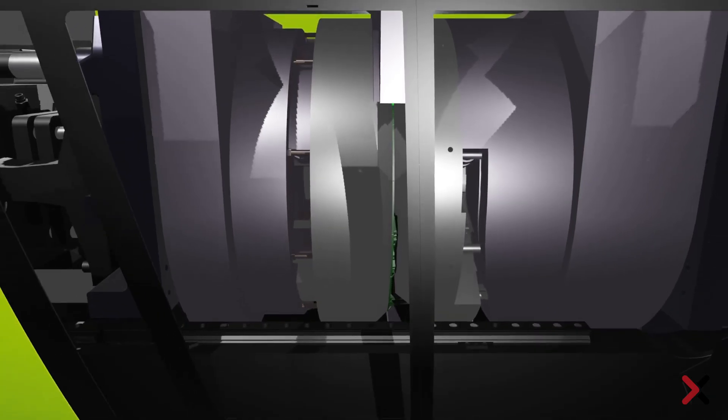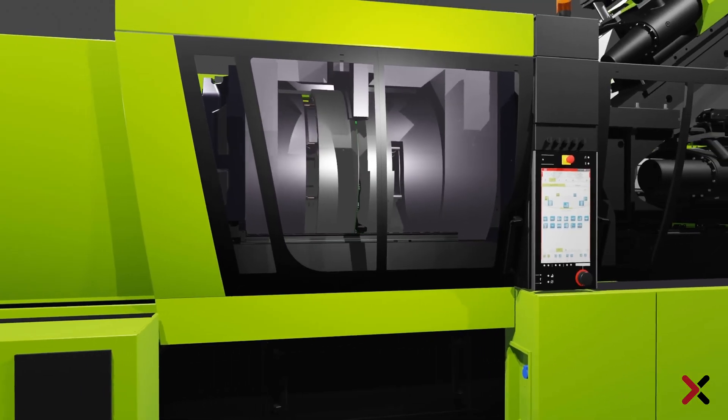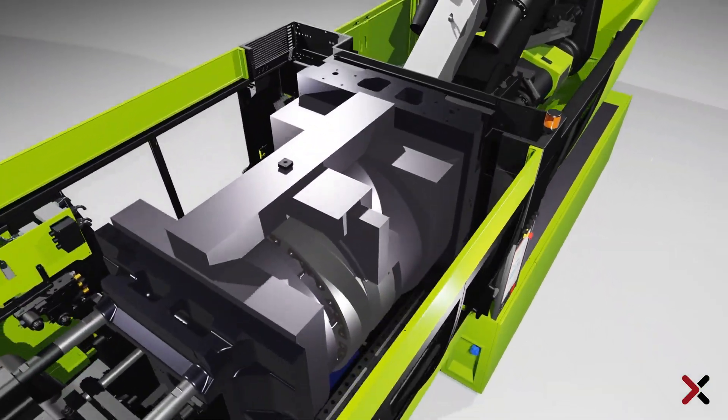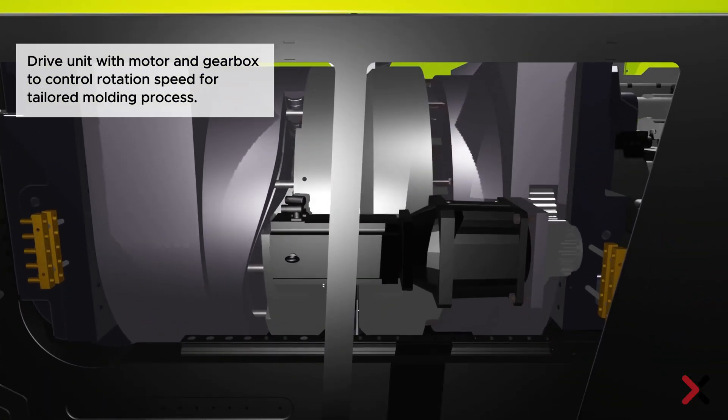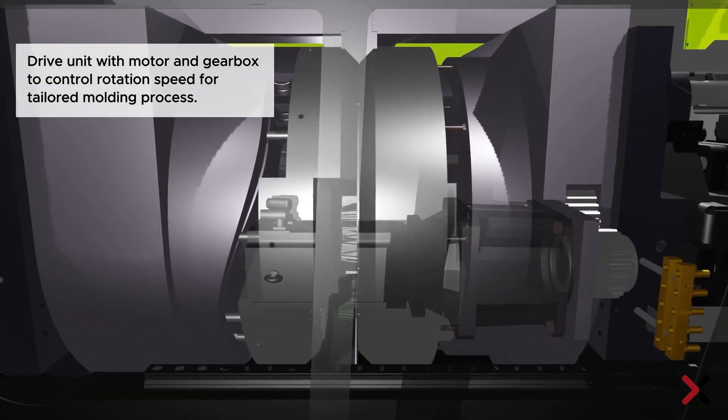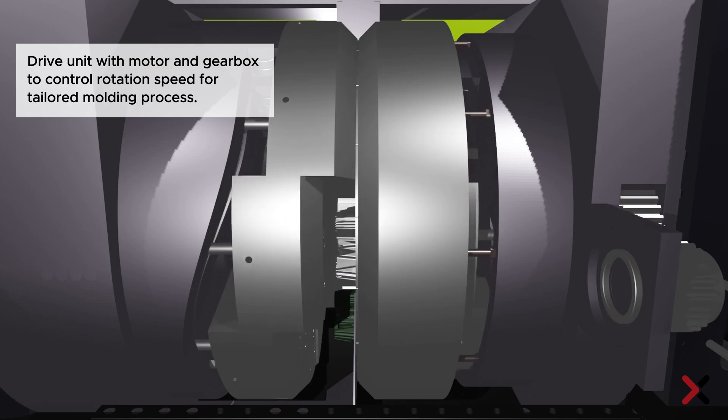The required drive unit of the rotary mold is situated at the rear, where a motor propels the rotating unit through a gearbox. Precisely controlling the rotation at a defined speed is essential for maintaining good component quality.